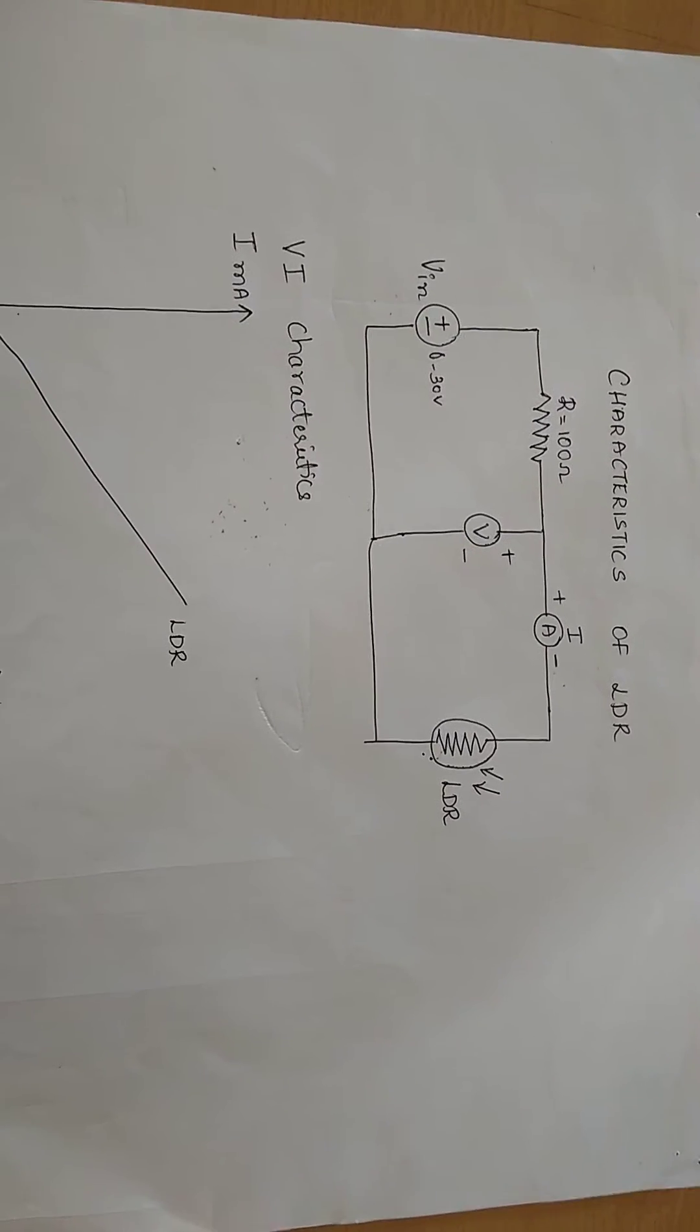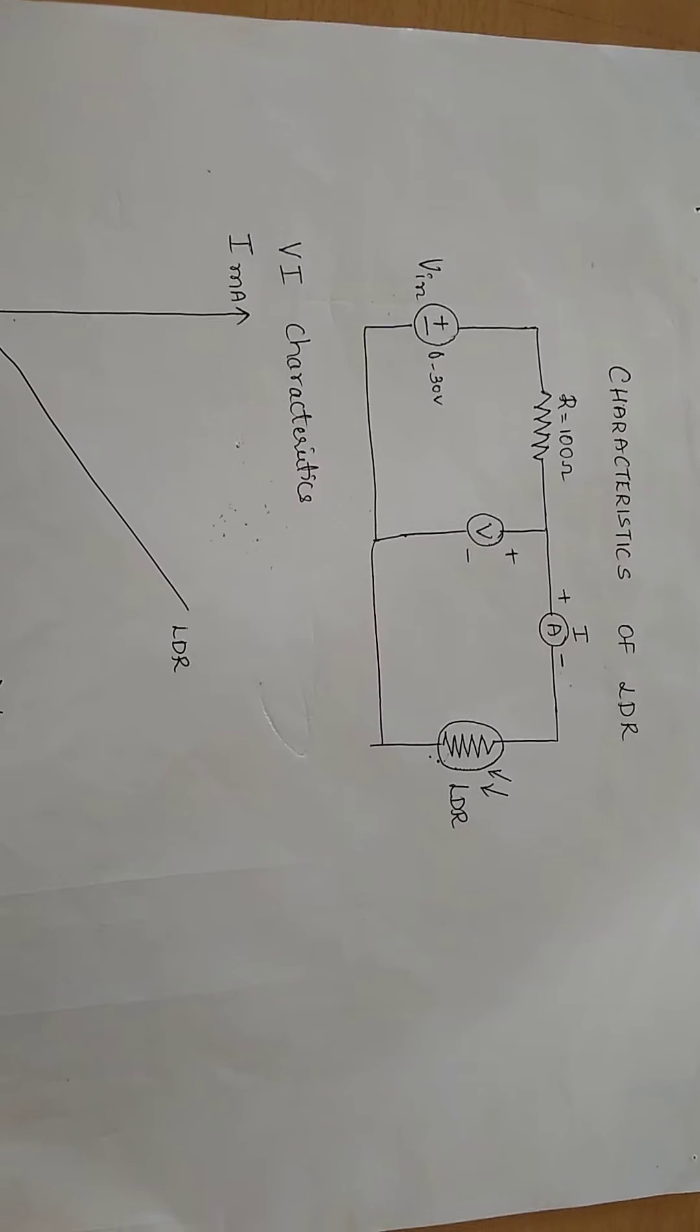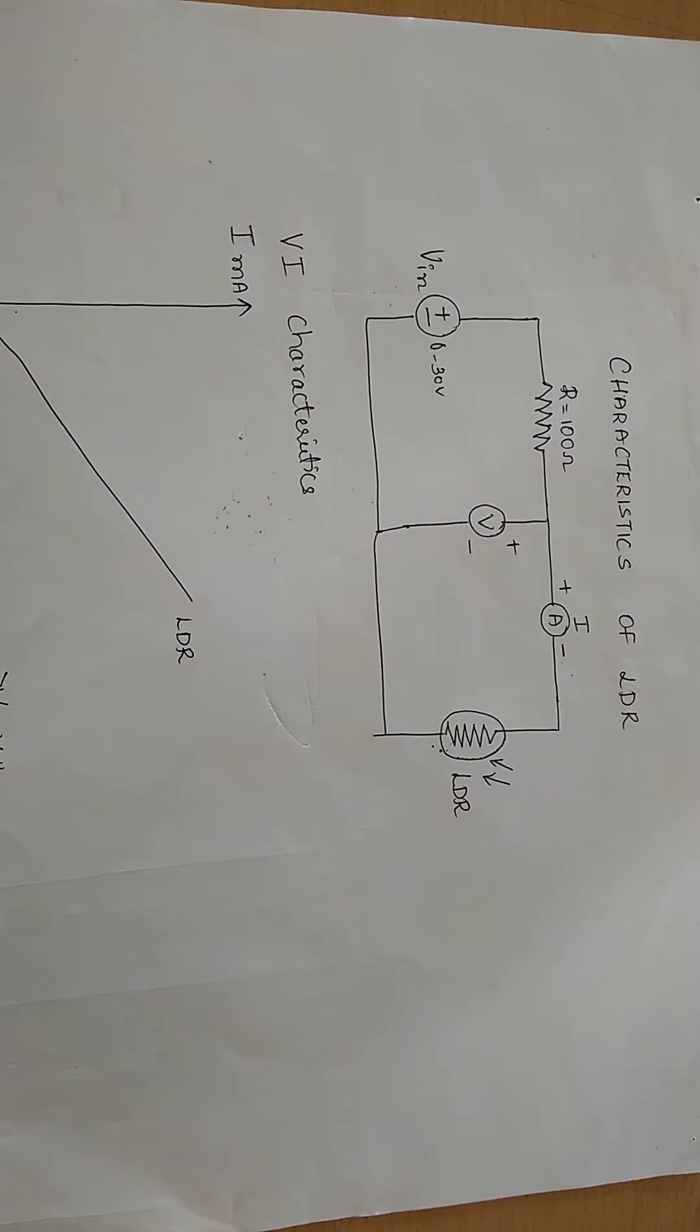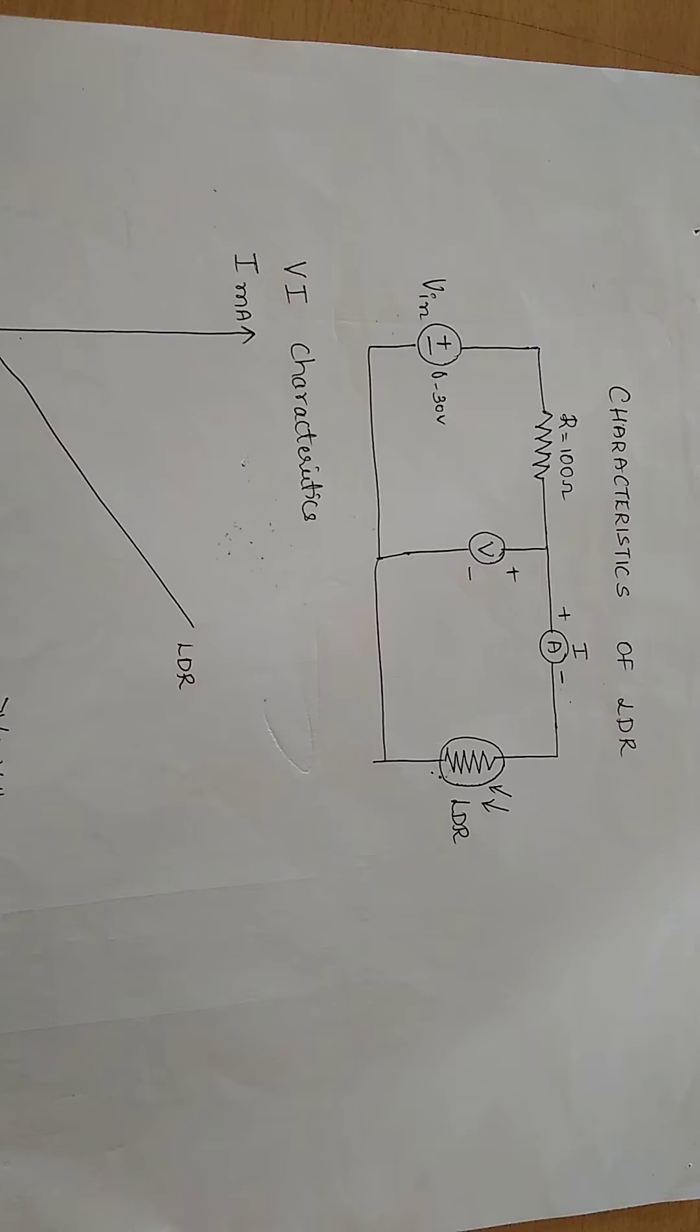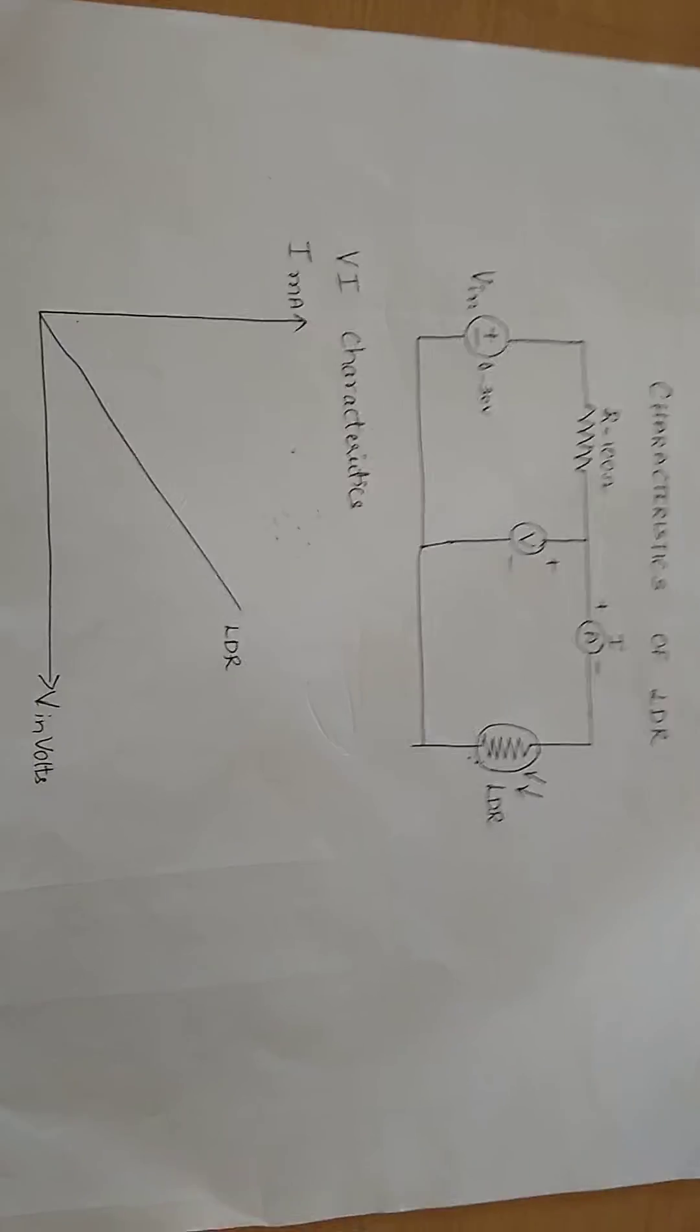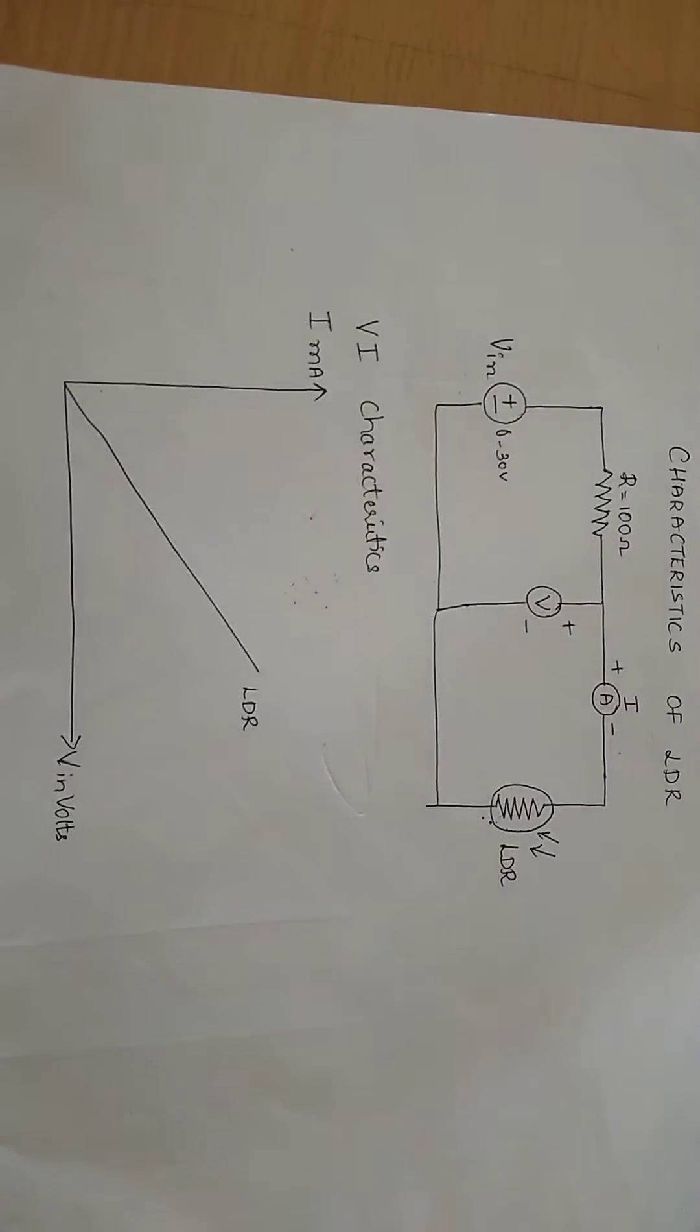Hi, in this video I am going to explain about characteristics of an LDR. LDR stands for light dependent resistor or photoresistor, a device whose resistivity is a function of the incident electromagnetic radiation. Hence, they are light sensitive devices. They are also called photoconductors, photoconductive cells, or simply photocells.